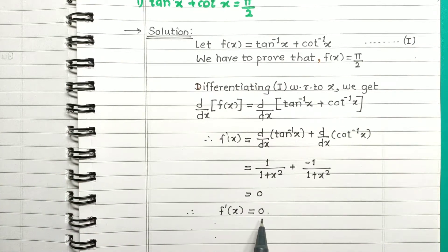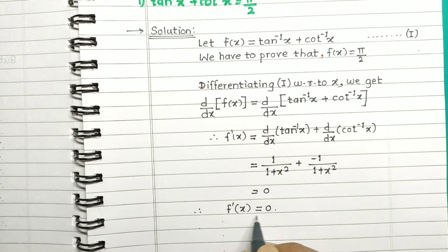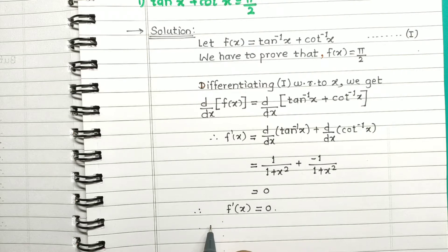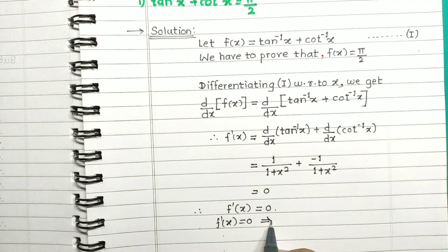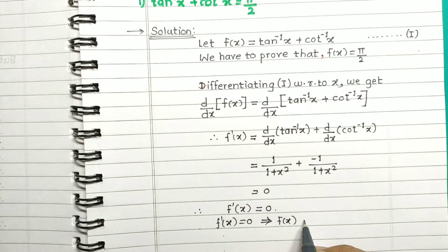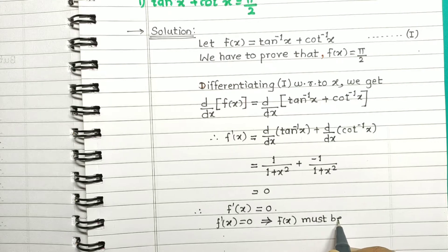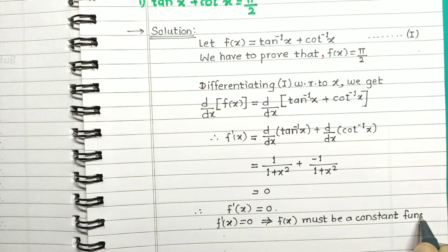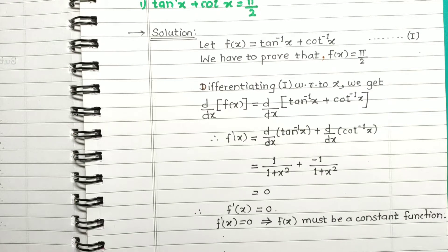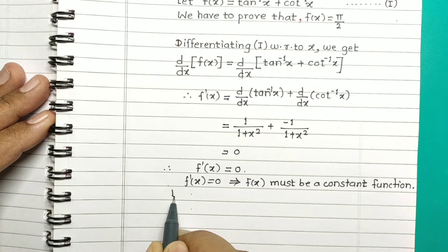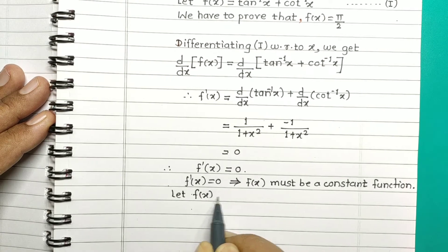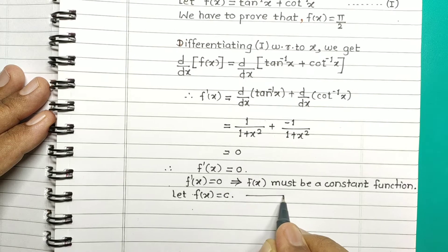Since f dash of x is equal to 0, this implies f of x must be a constant function. So let f of x be some constant c — call this equation number 2.